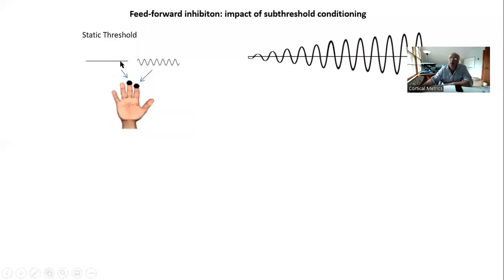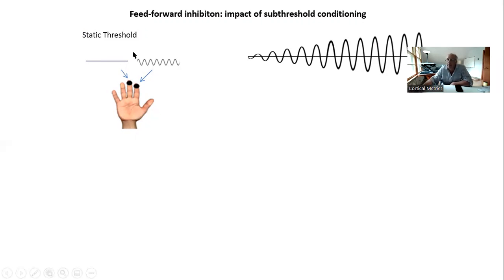In other words, you deliver a stimulus — usually about 20 microns — versus no stimulus, and you ask somebody which one is larger. Some people don't like the idea of no stimulus on one finger, but it actually works very well. It's very objective for somebody to say, 'I think I feel a stimulus on this finger rather than on that finger.'